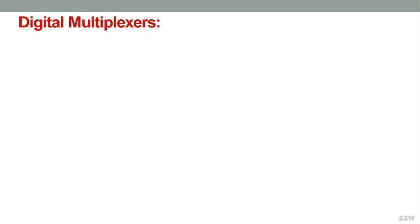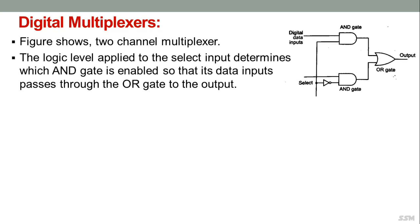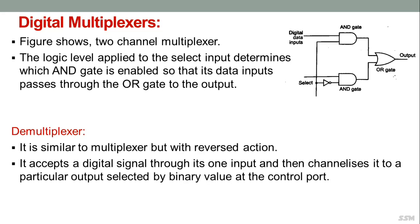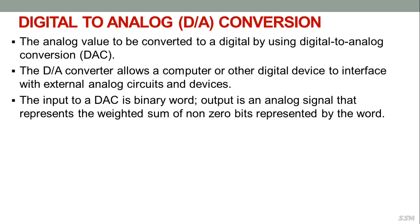A two-channel digital multiplexer uses a logic level applied to the select input to determine which AND gate is enabled, so that its data input passes through an OR gate to the output. A demultiplexer is similar to a multiplexer but with reverse action: it accepts a digital signal at one input and channels it to a particular output selected by a binary value at a control port.